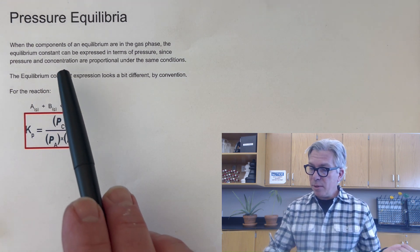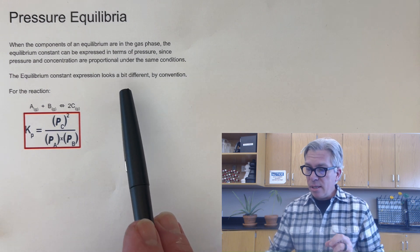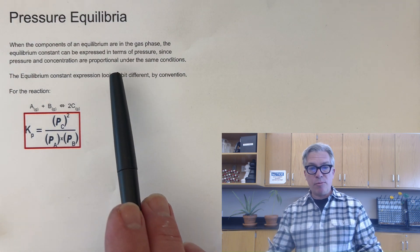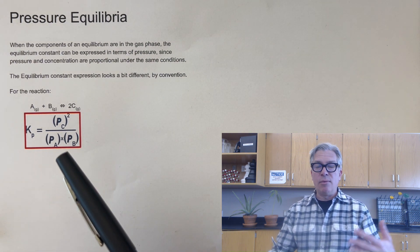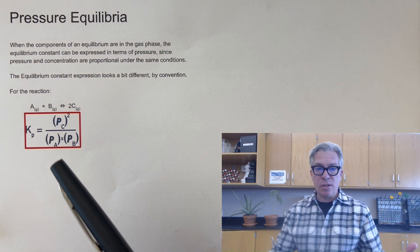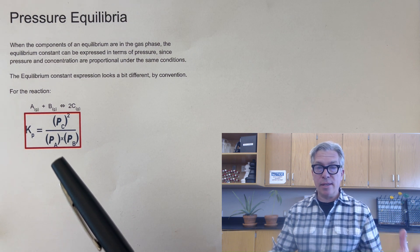First of all, when the components of an equilibrium are in the gas phase, the equilibrium constant can be expressed in terms of pressure since pressure and concentration are proportional under the same conditions. We've learned that the higher the concentration, the higher the pressure that the gas will exert.